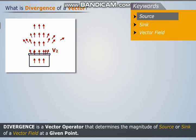Thus, divergence is a vector operator that determines the magnitude of source or sink of a vector field at a given point.